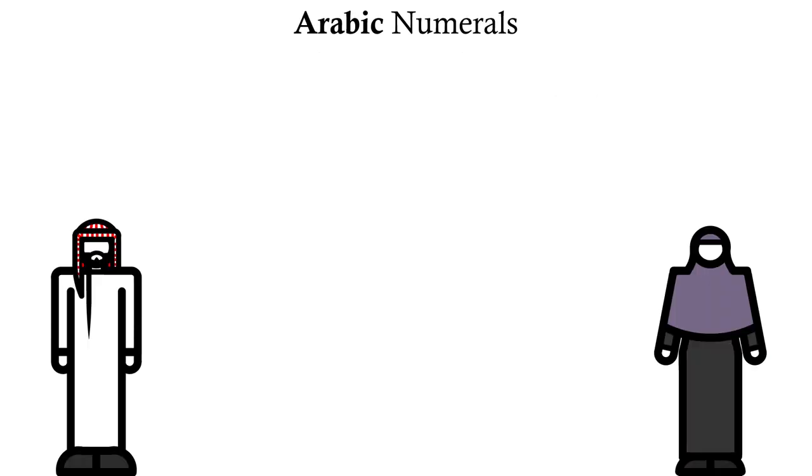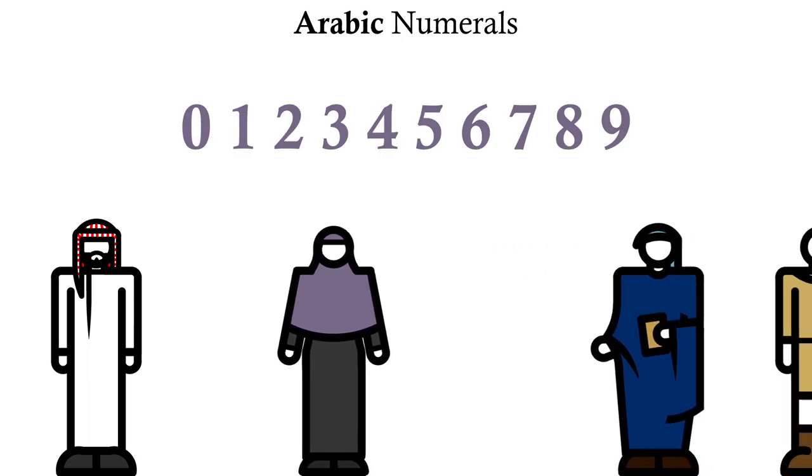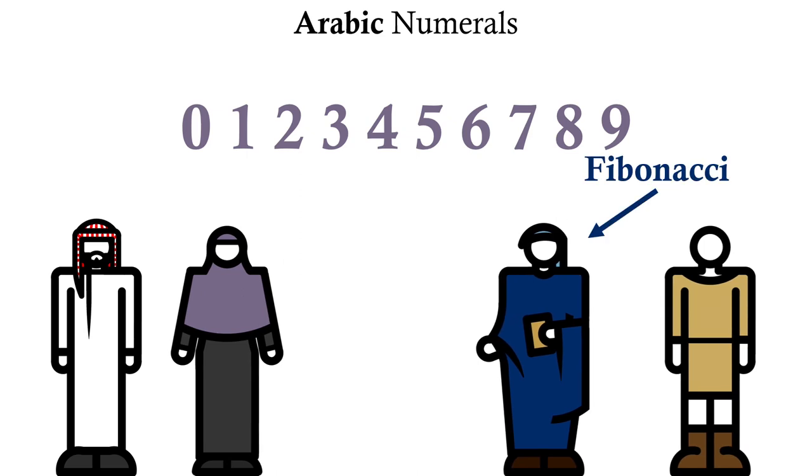And let's not forget that these are the Arabic numerals, so really, the people who didn't switch the numbers round were the Europeans when good old Fibonacci brought this numbering system to Europe.